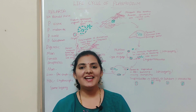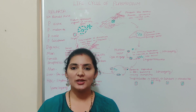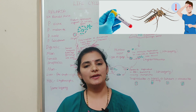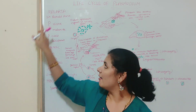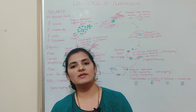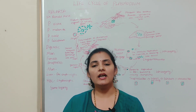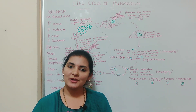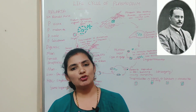Hi everyone, welcome back to my channel. In this video I'm going to talk about the life cycle of Plasmodium. As you all know, Plasmodium causes a disease called malaria. Malaria is a disease that man has been suffering from for many years. Literally, malaria means bad air — 'mal' means bad, 'aria' means air. It was called so because earlier it was believed that malaria is caused by bad air, but later it was discovered that malaria is caused by a protozoal known as Plasmodium, which belongs to class Sporozoa.